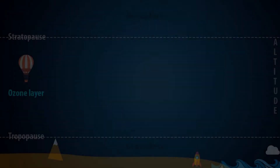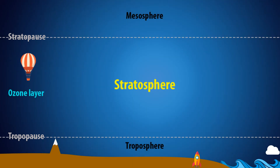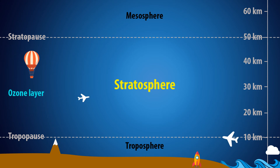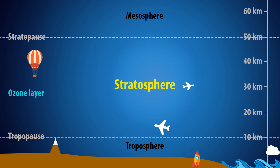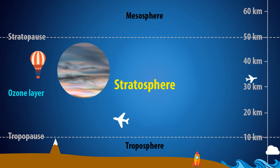Now let's go into the layer above the troposphere, called the stratosphere. It extends from the tropopause to about 50 kilometers above Earth's surface. The temperature here lapses constantly with height. The air is very dry and there are no normal clouds, but sometimes mother of pearl clouds are seen here.